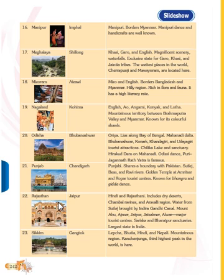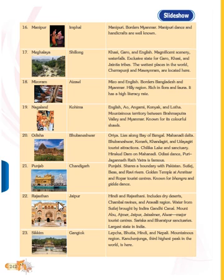Water is brought by the Indira Gandhi Canal. Mount Abu, Ajmer, Jaipur, and Alwar are major tourist centers. Sariska and Bharatpur sanctuaries are also found there. Rajasthan is the largest state in India. I hope you understand all the details and points covered so far.